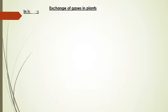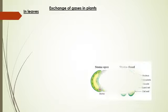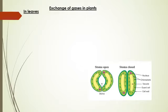The first thing to see for respiration in plants is the leaves. In leaves, gaseous exchange takes place through stomata. You can see in this diagram that the stomata are present on the surface of the leaf. Stomata are the aerating pores present on the epidermis of the leaf.